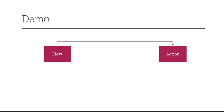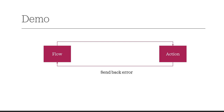In this demo, we will be calling a custom action from a flow, throwing an error from the custom action, and the error should go back to the flow which should display it. One great thing about custom actions is that you can customize the error message and error code. For example, instead of the default error code of 1, you can create your own code such as 999 and a custom error message with the application name or context for that particular error.